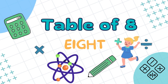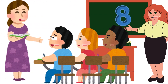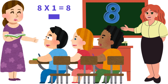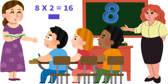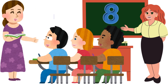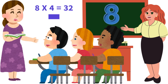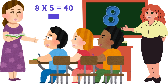Table of 8. 8 ones are 8, 8 twos are 16, 8 threes are 24, 8 fours are 32, 8 fives are 40.